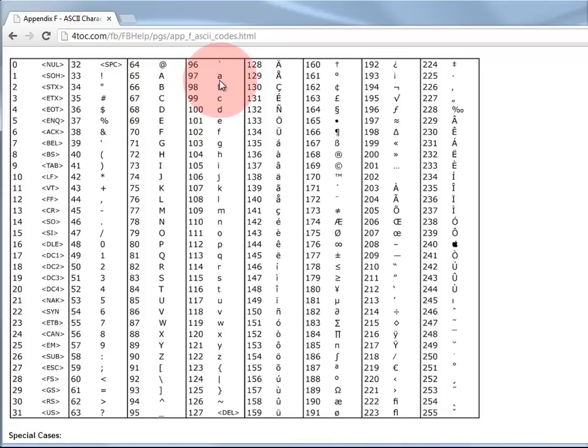Lowercase come a little bit later, starting at 97, 98, 99, one letter after the other.